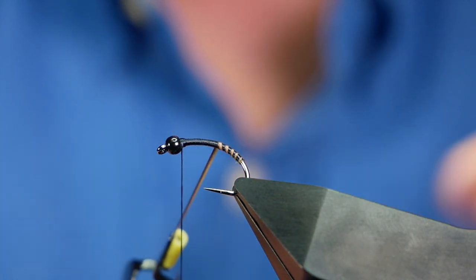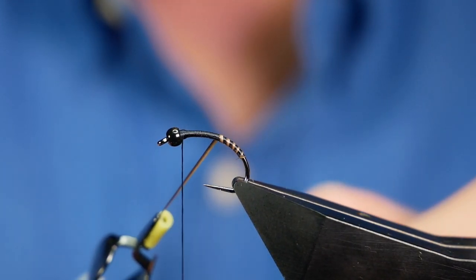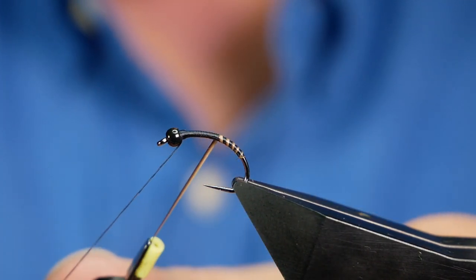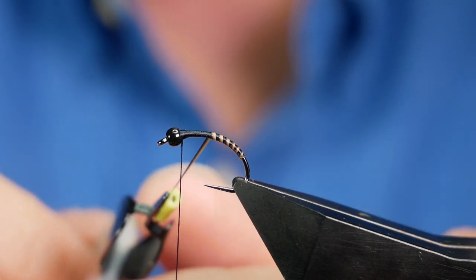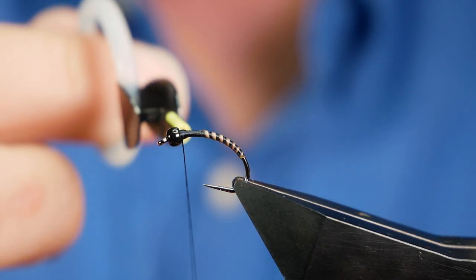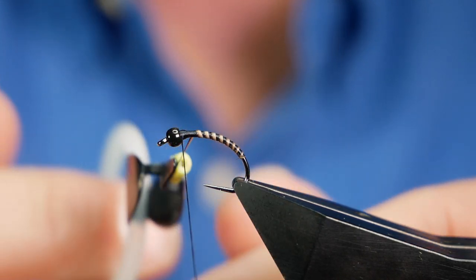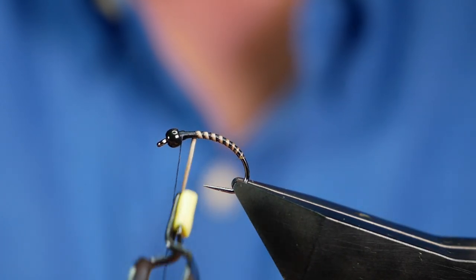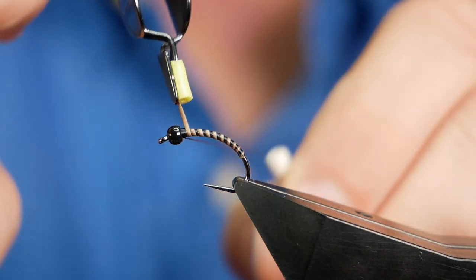Now once I've got to a certain point, I can just move my vice back into the right position and hopefully the fly's come back into focus for you there. And then I can bring my rib all the way up and finish it just when it meets my thread.